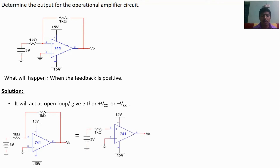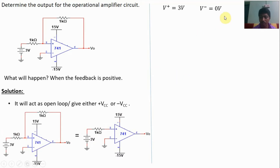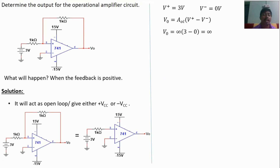So the positive feedback configuration is equal to the open loop configuration. To solve the problem: V plus is equal to 3 volts, V minus is equal to 0 volts. V naught is equal to Aol into (V plus minus V minus). Aol is infinite for an ideal op-amp. V plus is 3 volts, V minus is 0, so V naught equals infinite. The maximum output the op-amp can give is plus Vcc or minus Vcc.